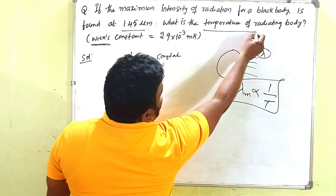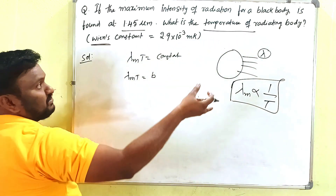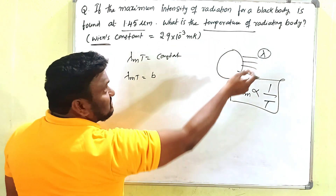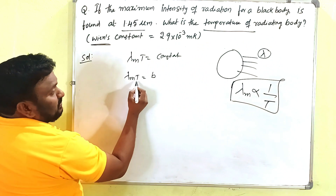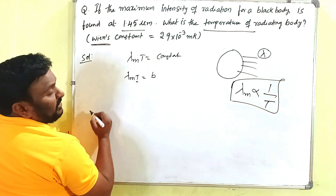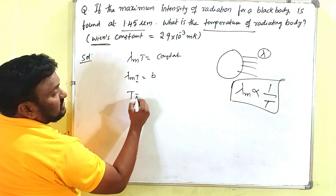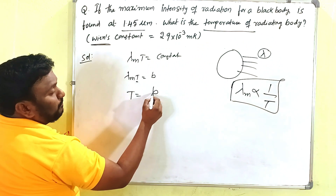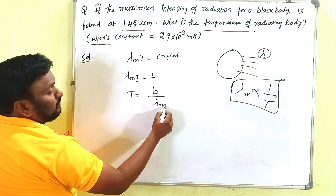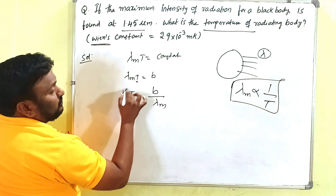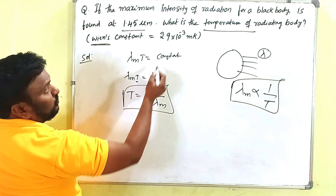We have to find the temperature of the radiating body, i.e., we have to find T. So T = B / λ_m. What is B here? B is Wien's constant.